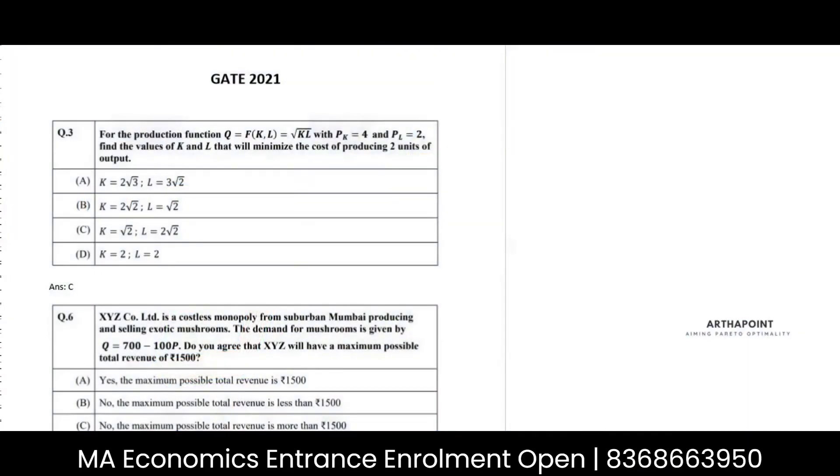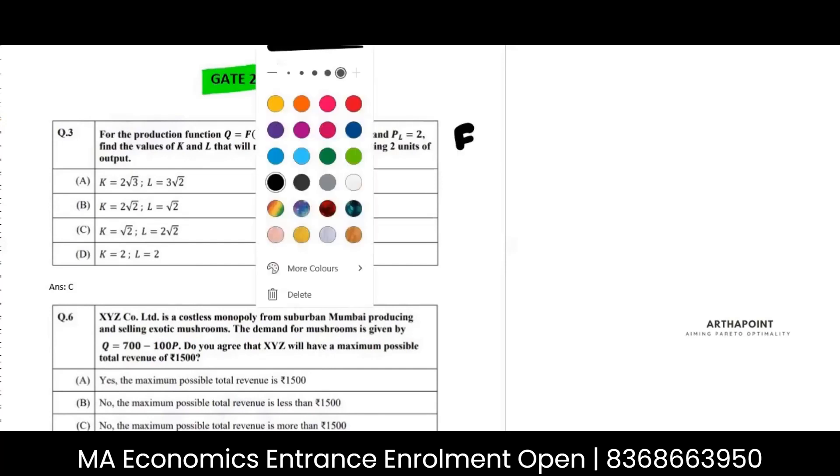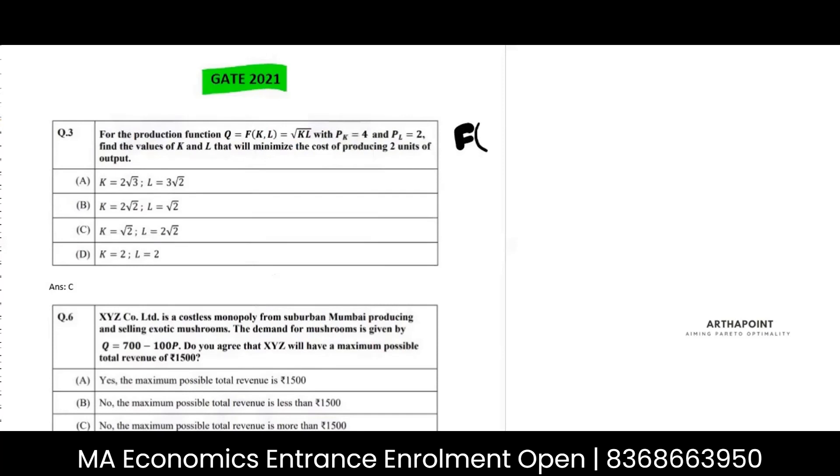Now, this is Gate 2021 paper. It says for the production function given root KL, so we are given a production function root of KL, and prices of capital and labor are given. It says find the value of KL that will minimize the cost of producing two units of output.